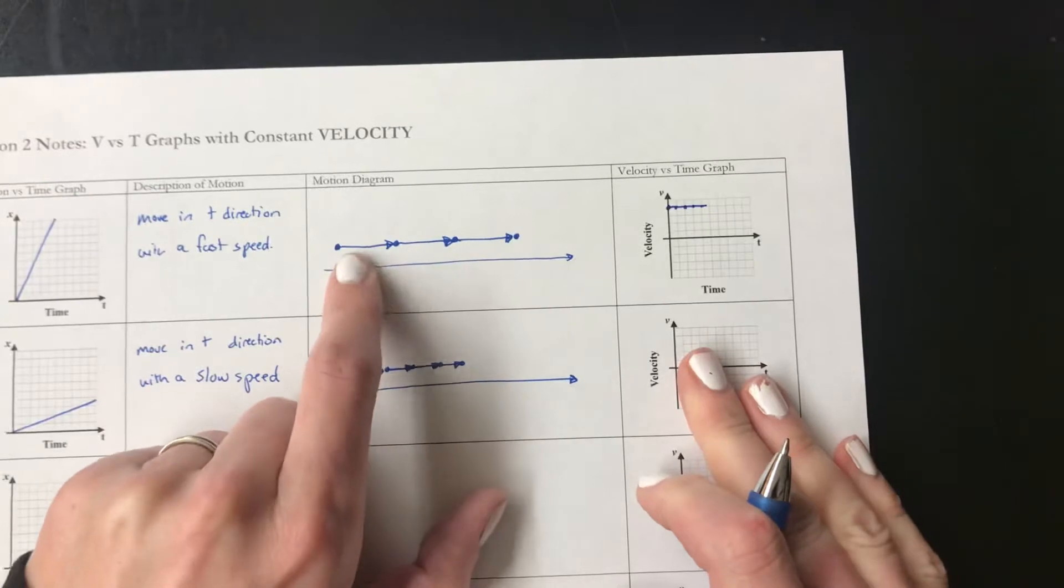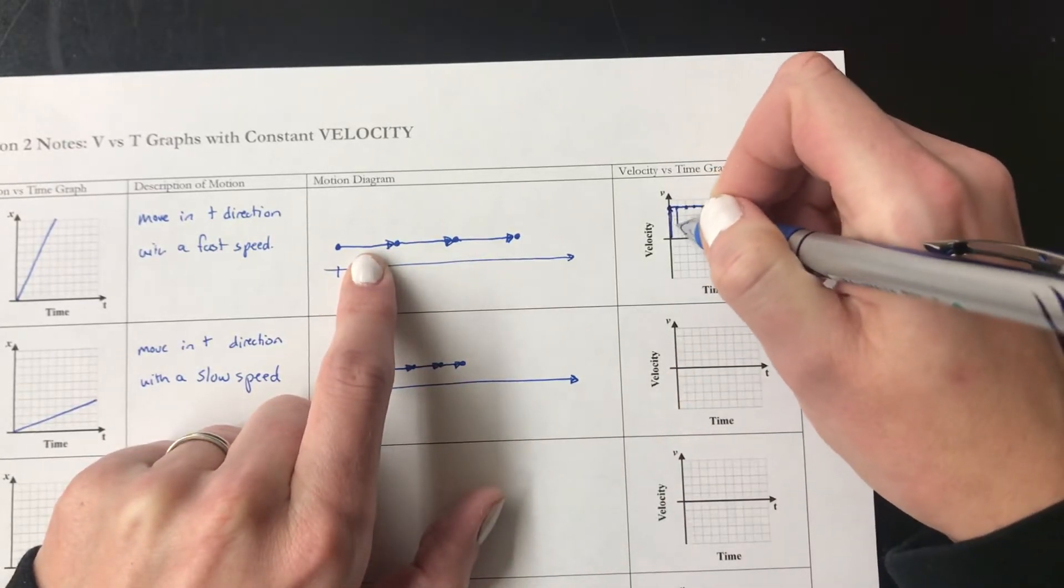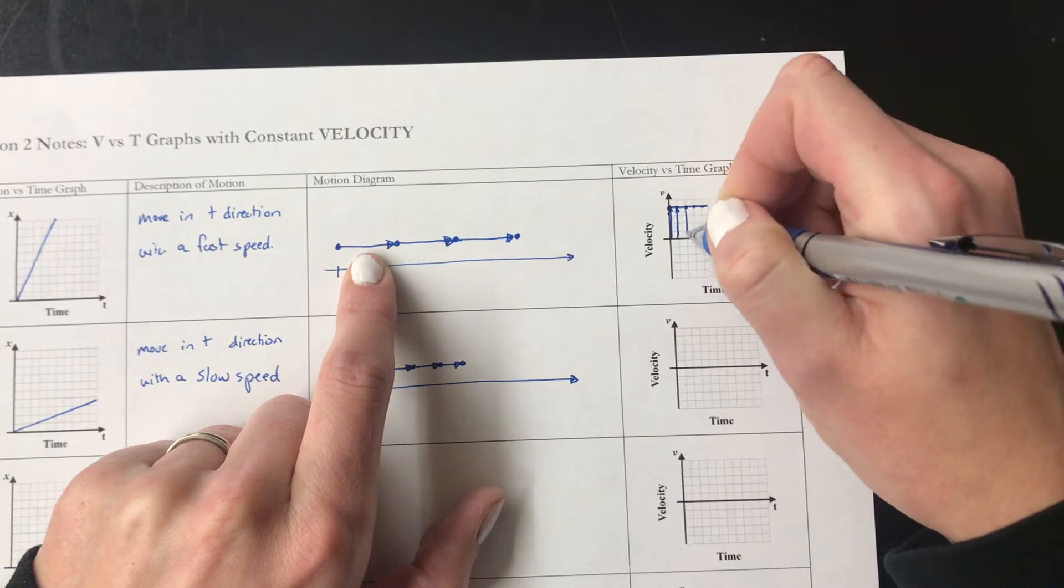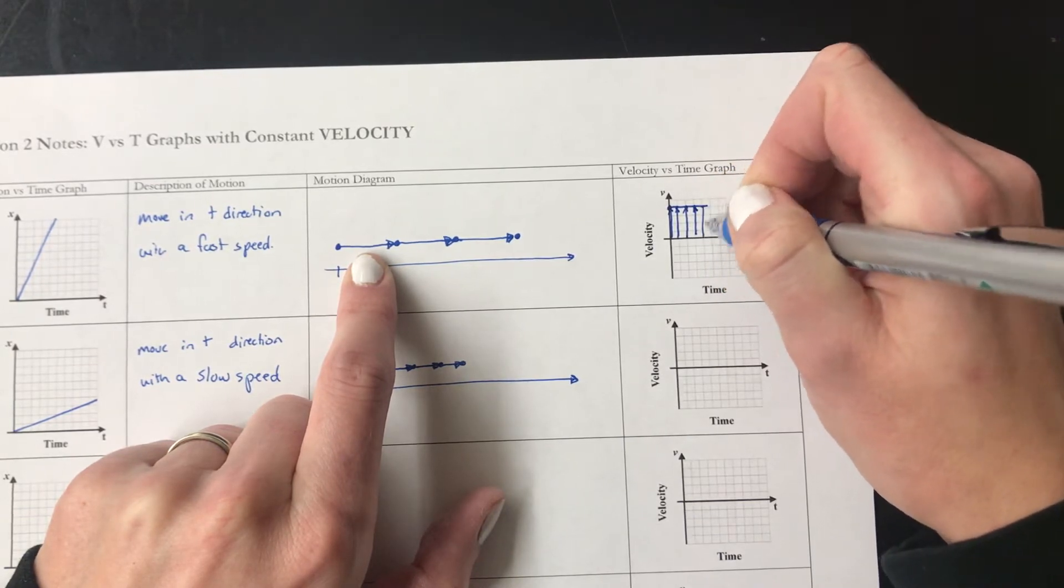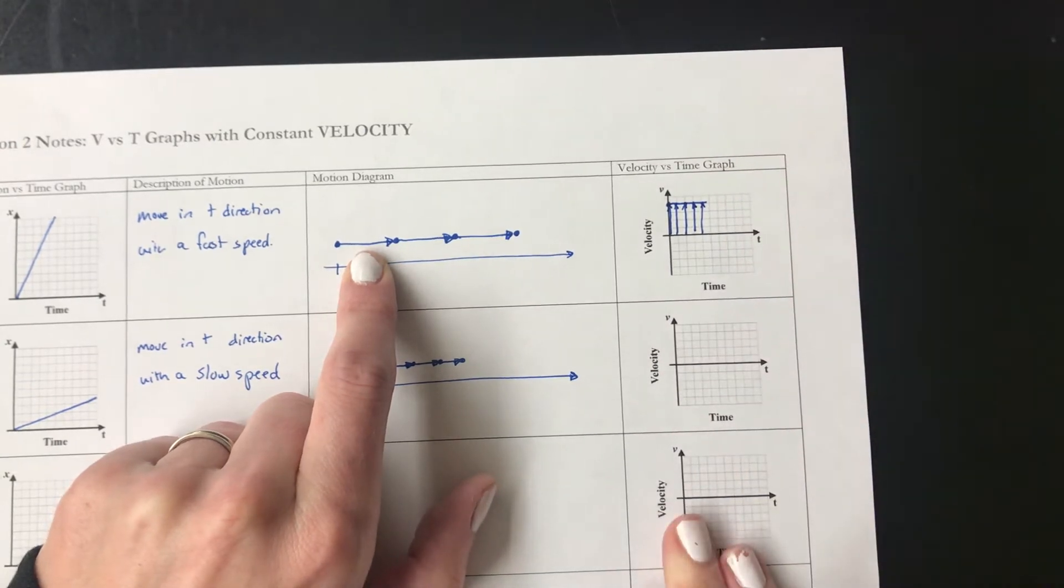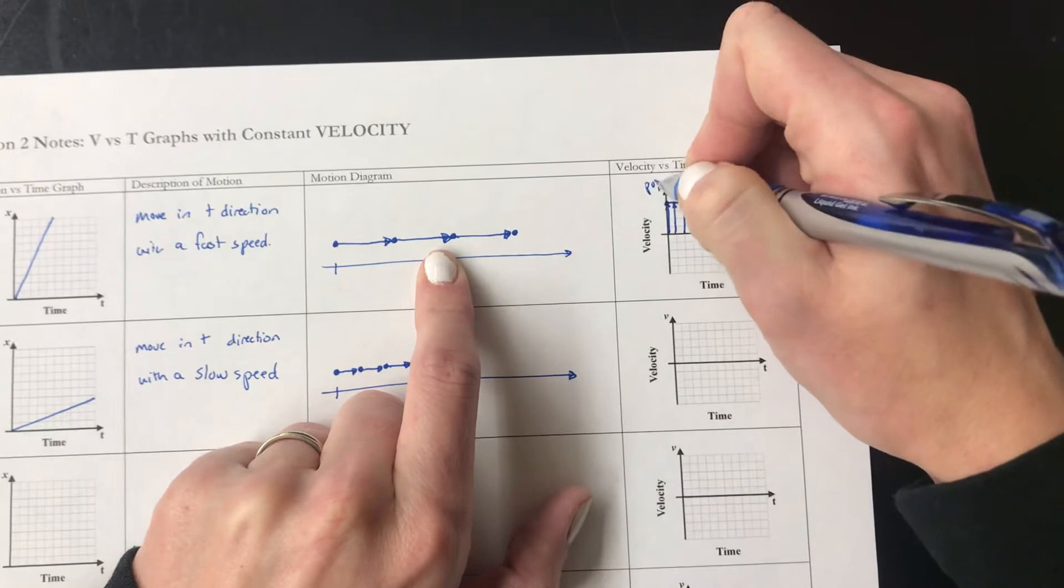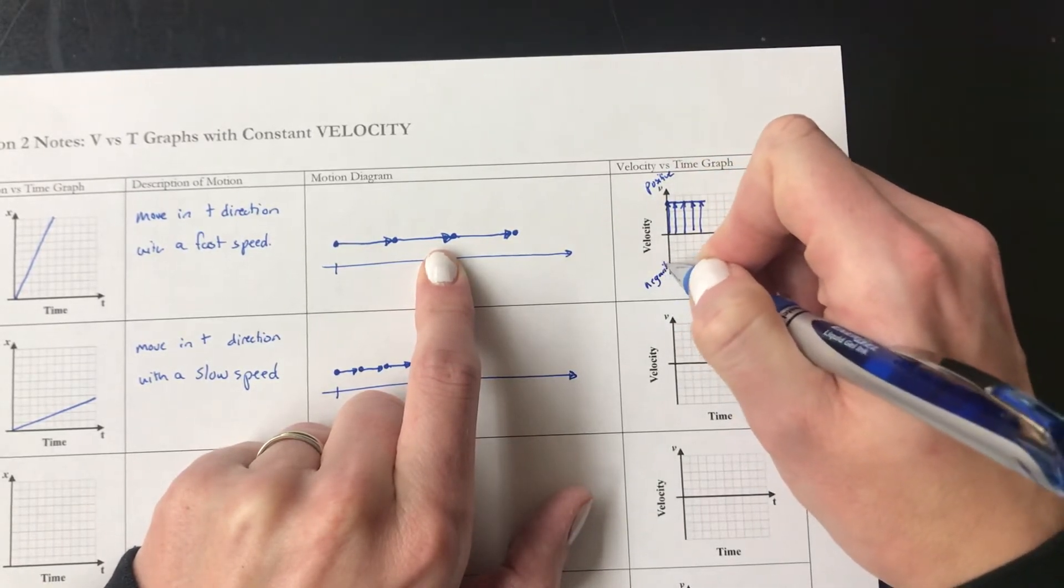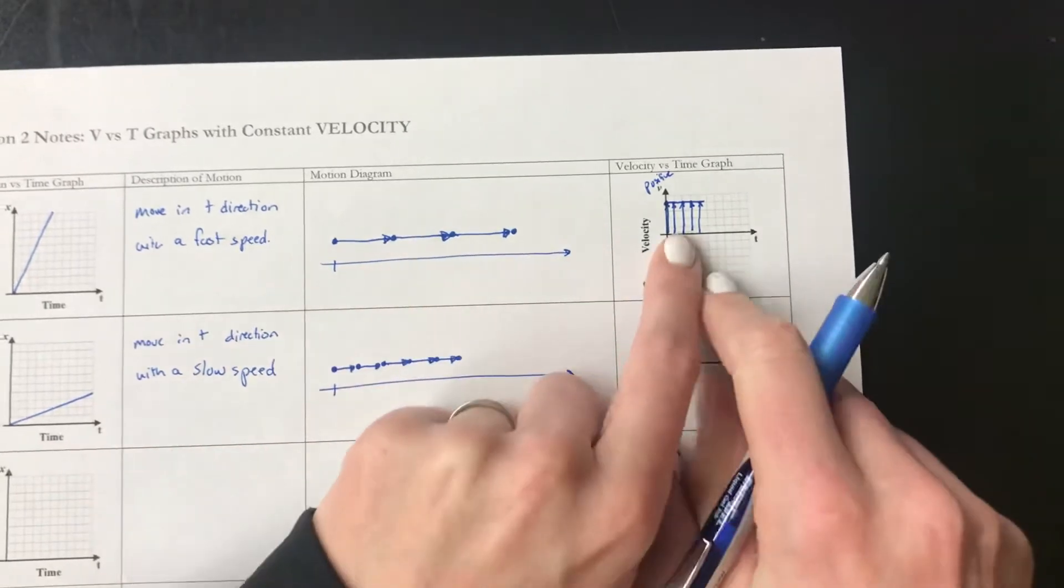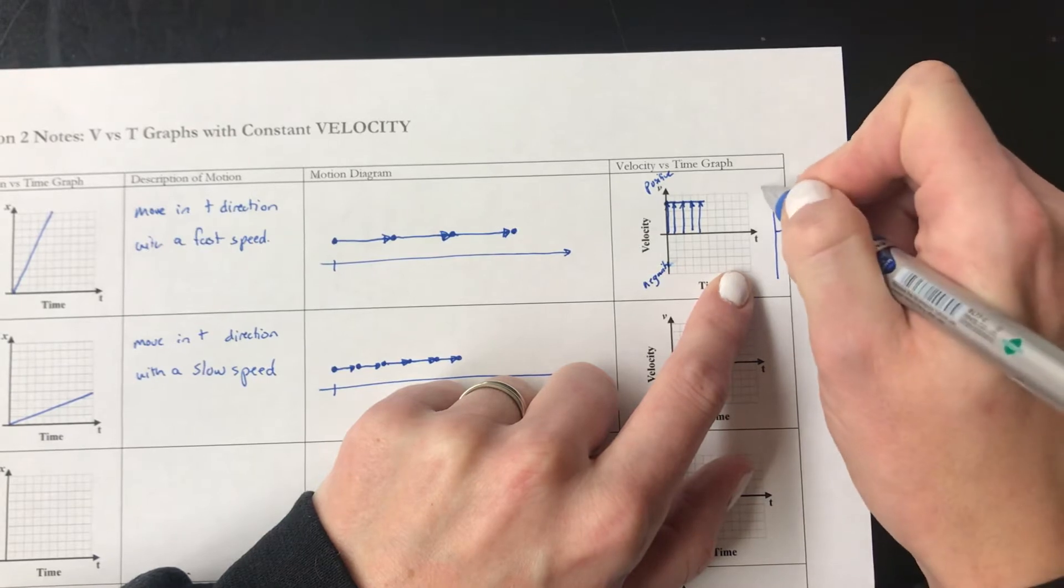And the other way that I can think about it is I'm taking these arrows and I'm turning them to point up. They're pointing up because they're going in the positive direction. So this would be the positive direction and this would be the negative direction. And so I've taken my arrows and I've set them up.